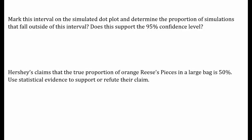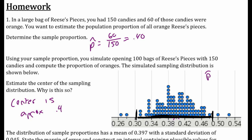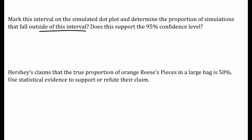Determine the proportion of simulations that fall outside this interval. Counting them: 1, 2, 3, 4 — four out of 100 times, so 4%, which means 96% are inside the interval.